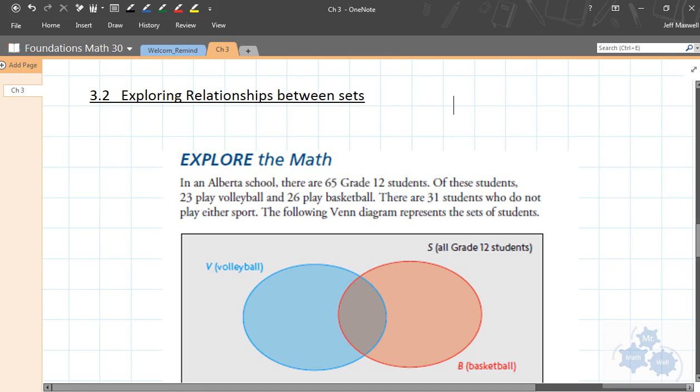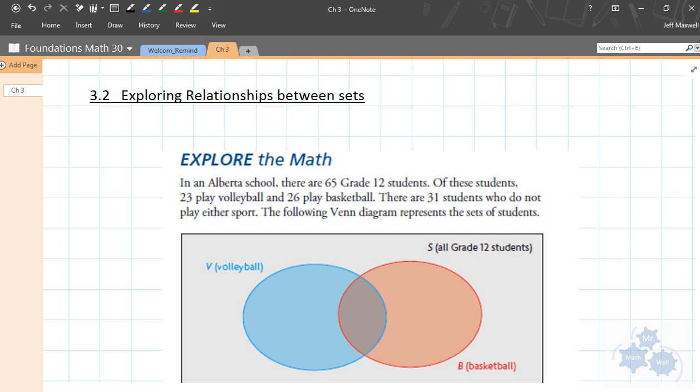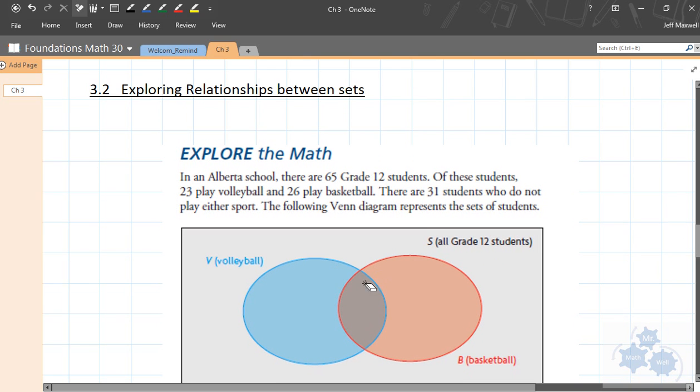All right, so section 3.2, Foundations of Math 30. We are going to continue looking at sets. We talked about set notation, we talked about some definitions in our last lesson, and today we're going to talk a little bit more about Venn diagrams, what each of the regions in the Venn diagram means.